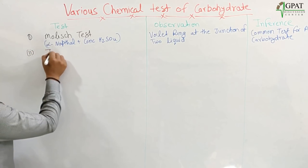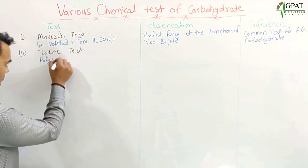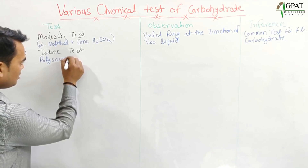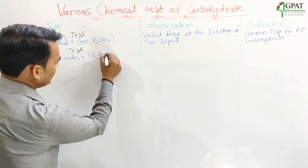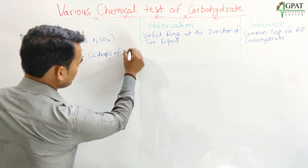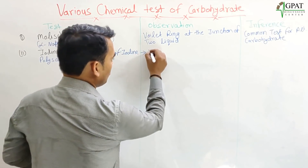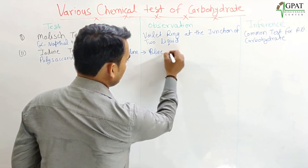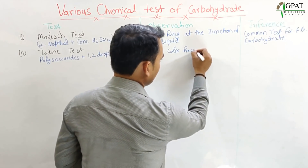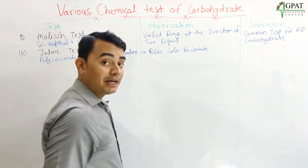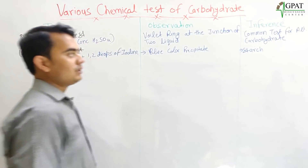The iodine test is applied to polysaccharides. We add one to two drops of iodine. If a blue color precipitate forms, it is a positive test for starch.